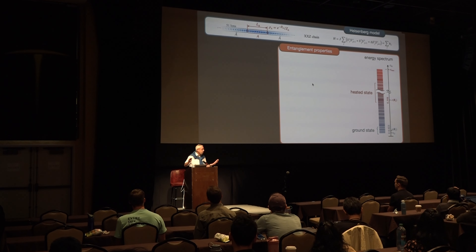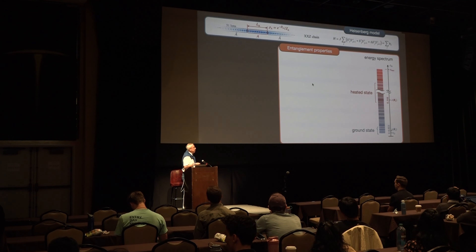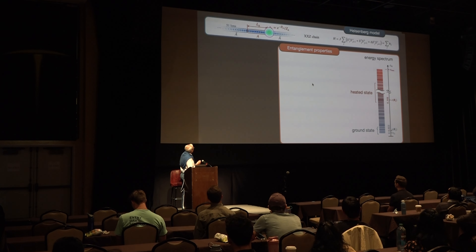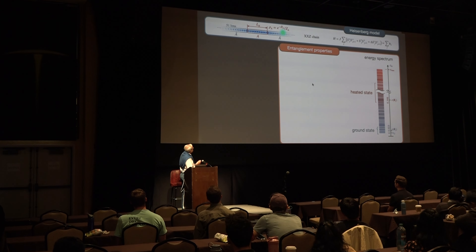So forget about full tomography for these large subsystem sizes. We want to do it not by measuring rho_A directly, but by measuring H-tilde, which is the entanglement Hamiltonian.